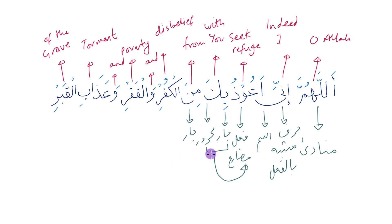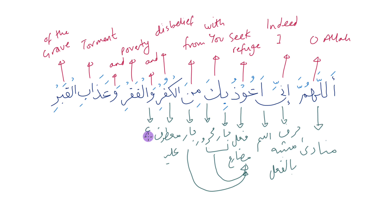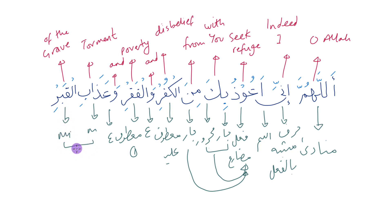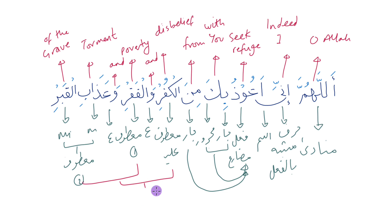How many harf jar are there — do you guys know? Put it in the comments below, connected to the a'udhu. Kufr is going to be the ma'toof alayhi. Then you have wa, which is the ataf. After that you have two ma'toofs: faqar is ma'toof number one, wa is the ataf, and azaab al-qabr — mudaf and mudaf alayhi put together — becomes the second ma'toof of kufr. Two ma'toofs together, connected to the ma'toof alayhi.